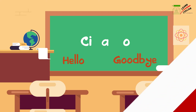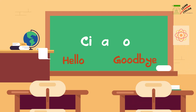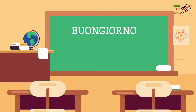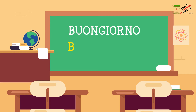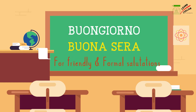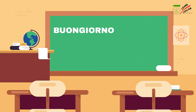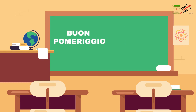Ciao is an informal way to greet someone. In Italy it is rude to say ciao to someone you don't have a friendly relationship with. You have to address people correctly by saying 'buongiorno' or 'buona sera', which are appropriate for friendly and formal salutations. Buongiorno means good morning or good day. You can also say 'buon dì'. 'Buon pomeriggio' is good afternoon, but this is not commonly used in Italy.